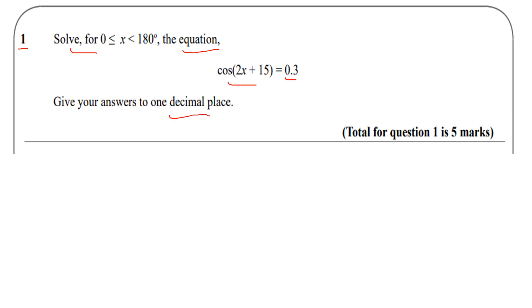Step one is to rearrange this equation to make it x equals. I'm going to take inverse cos of both sides, so I'm going to have 2x + 15 = cos⁻¹(0.3), or arccos(0.3), whichever you were taught in school or college. Arccos is the same as saying cos inverse or cos to the power minus 1.